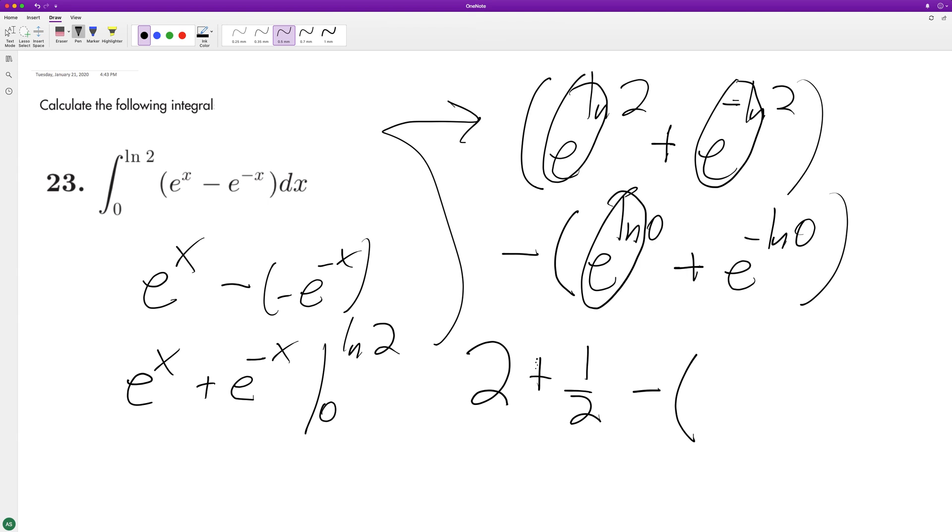Minus, so that becomes 1. Anything raised to 0 is 1, so 1 plus 1. So this is 2.5 minus 2. We end up with 1 half or 0.5.